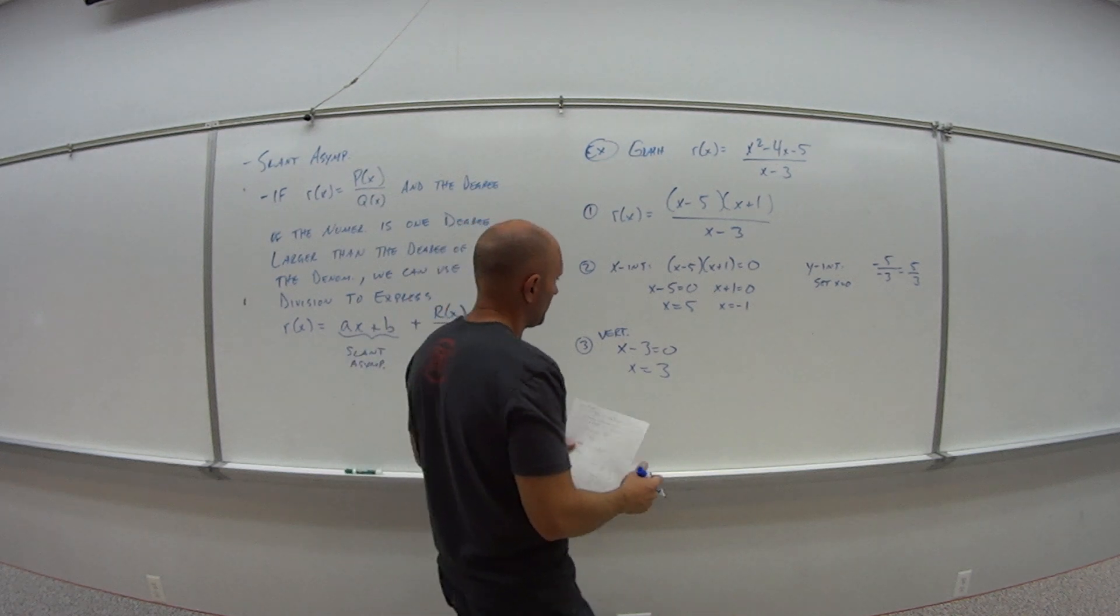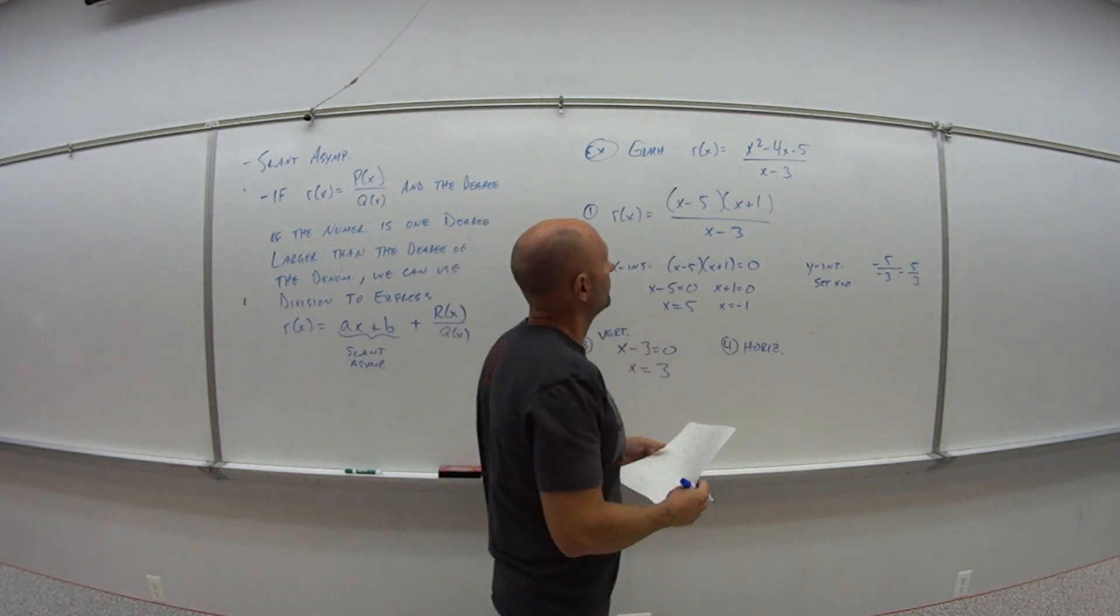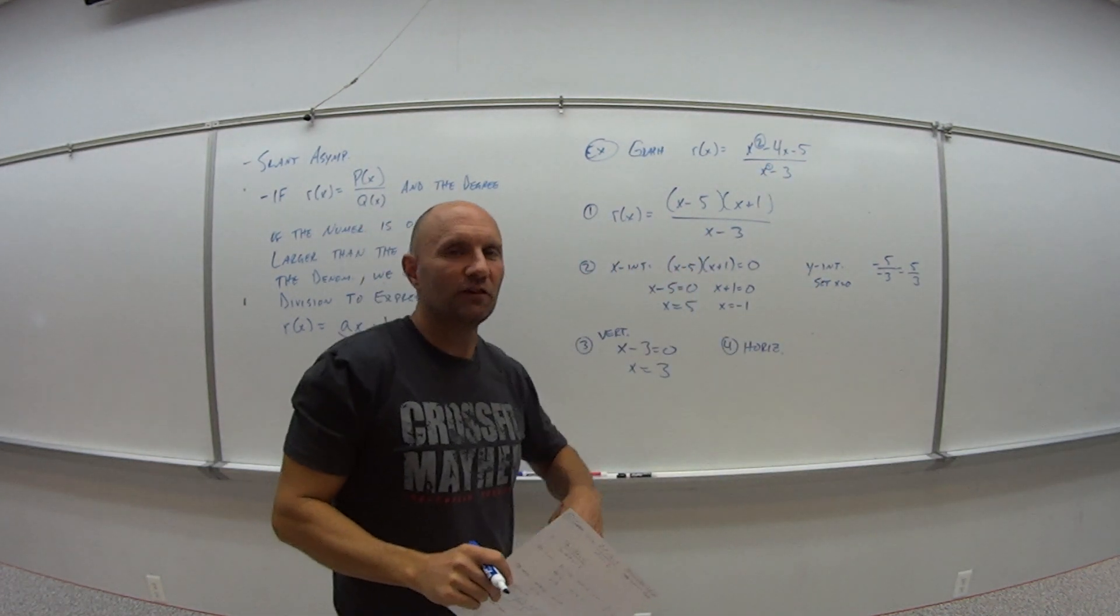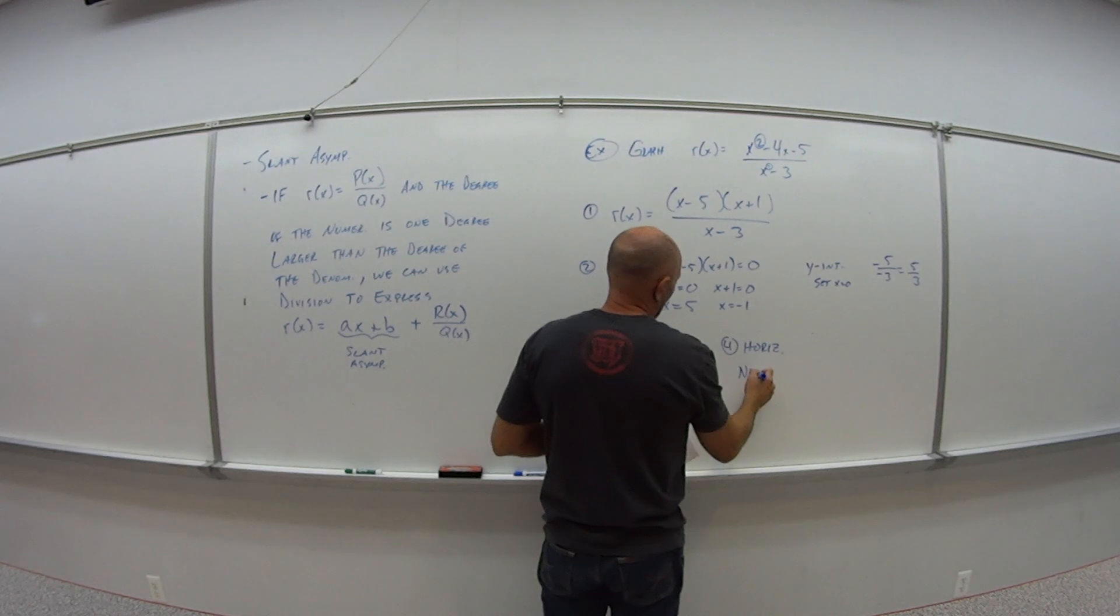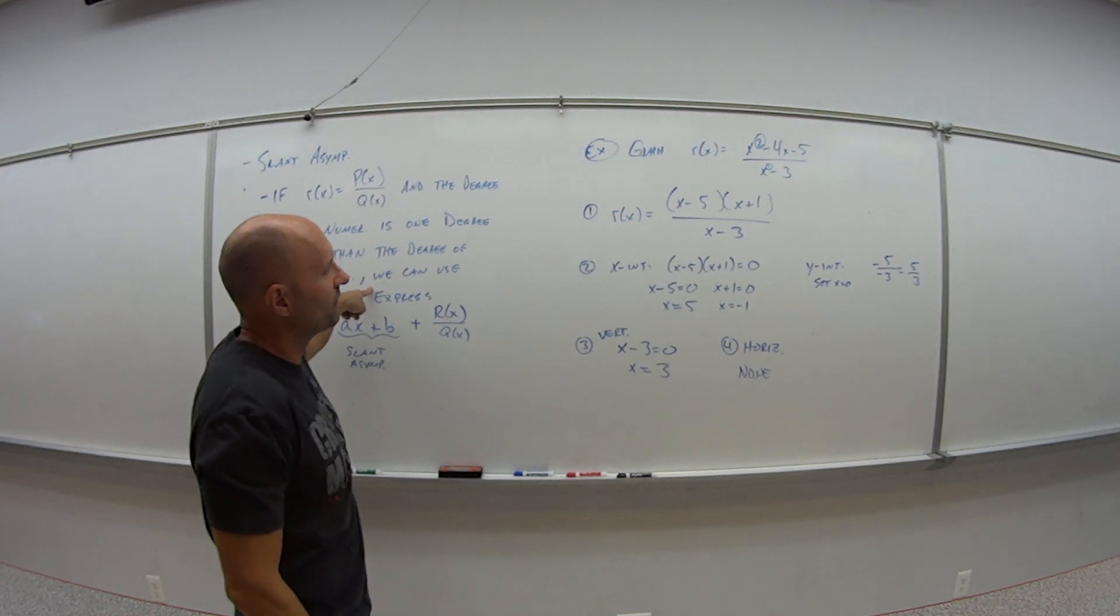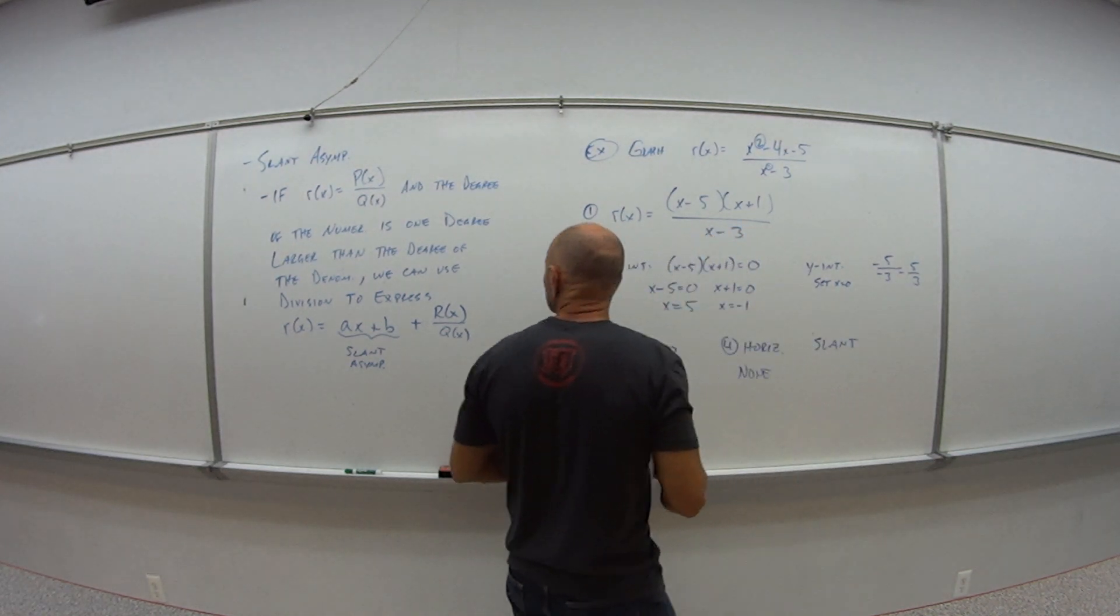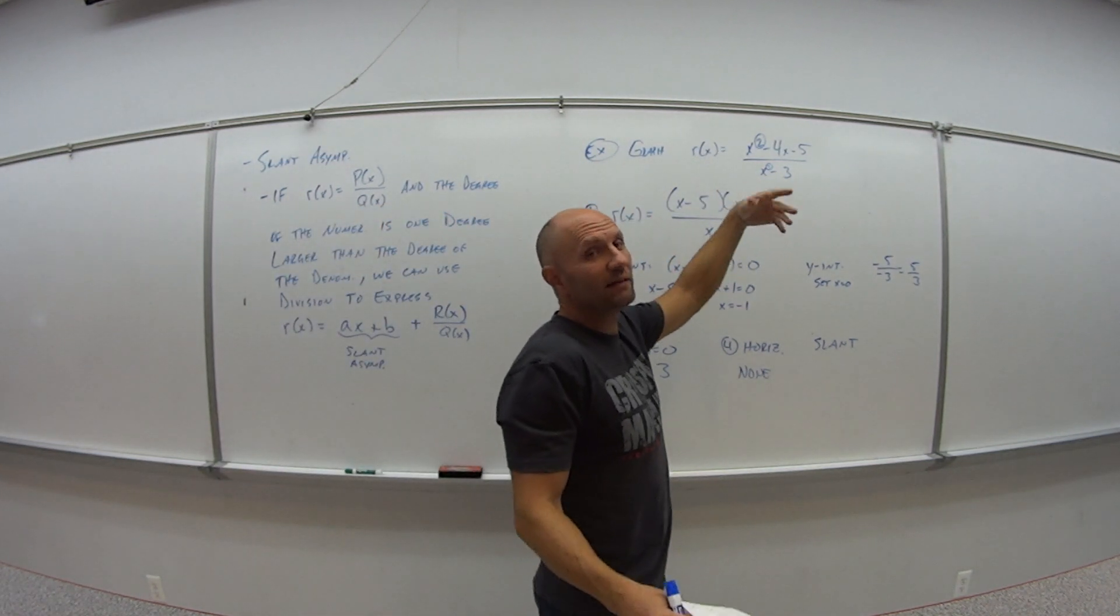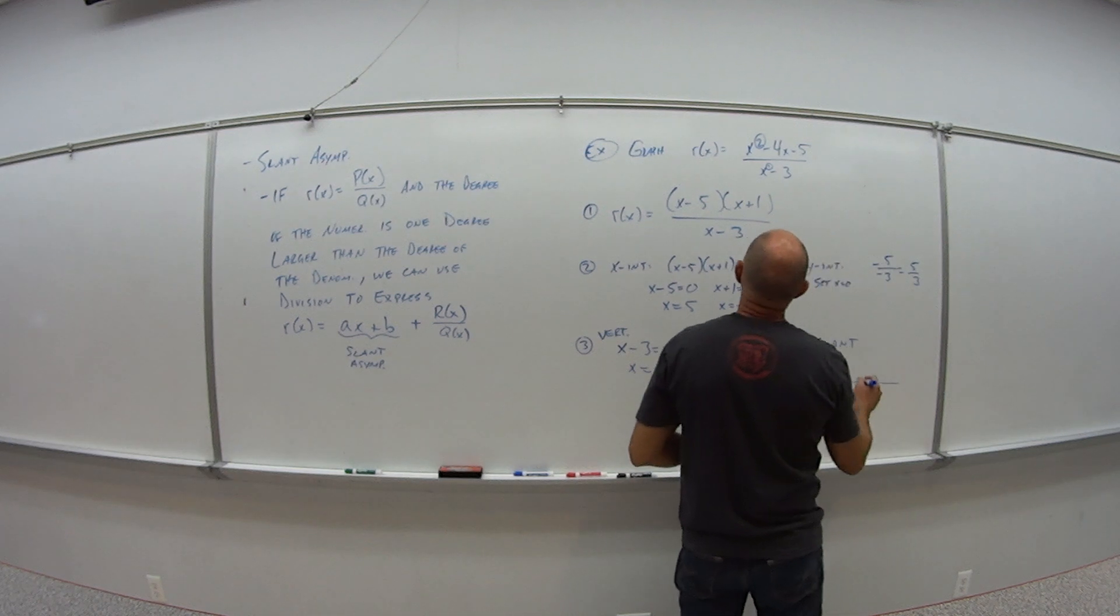Step four would be finding my horizontal asymptotes. So now I go back and look. The degree of the numerator is 2. The degree of the denominator is 1. So in this case, the numerator is bigger than the denominator, so I don't have any horizontal asymptotes. But because the degree of the numerator is bigger by 1 than the denominator, it means I have a slant asymptote. And so what I do there is I'm going to divide, just going to divide this guy out. So because the bottom is x minus 3, that's like x minus c, so I'm fortunate I can use synthetic division.